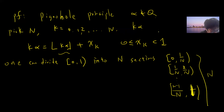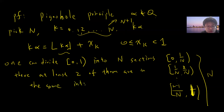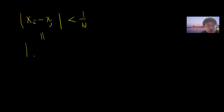So we have n sections. The total number of fractional parts x_k is n+1 numbers (k = 0, 1, ..., n). By the pigeonhole principle, at least two of them are in the same interval. So there exist i and j such that x_i and x_j are in the same interval, meaning their difference satisfies |x_j − x_i| ≤ 1/n.